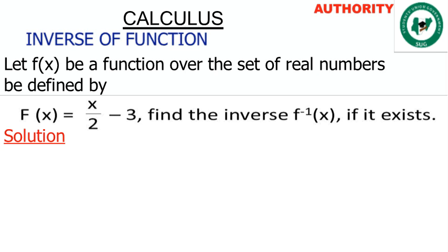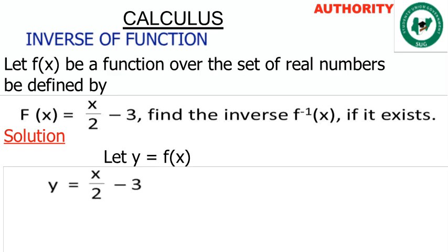Let me show you what I'm saying. We have f(x) = x/2 − 3. Step one: let y = f(x), so in place of f(x) we write y. It will look like: y = x/2 − 3. The next step is to make x the subject of the formula — that is, solve for x. We have y = x/2 − 3.